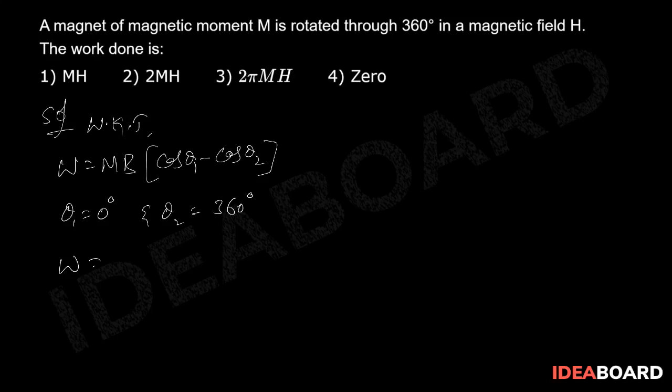Therefore, if we calculate the work done W equals M, the magnetic field is given by H, into cos 0 degrees minus cos 360 degrees. From this M into H into cos 0 which is 1 minus cos 360 which is 1, that is equal to 0.